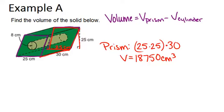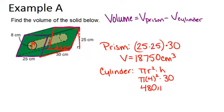Now for the cylinder, the volume is pi r squared times height. And in this case, we know that diameter is 8, which means that the radius will just be 4. And the height is 30, just like it was for the prism. So it's pi times 4 squared times 30, which is 480 pi.